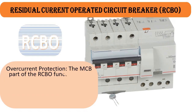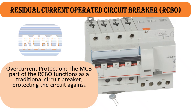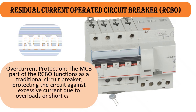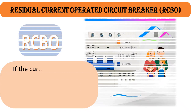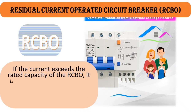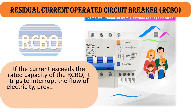Two: Overcurrent Protection — the MCB part of the RCBO functions as a traditional circuit breaker, protecting the circuit against excessive current due to overloads or short circuits. If the current exceeds the rated capacity of the RCBO, it trips to interrupt the flow of electricity.